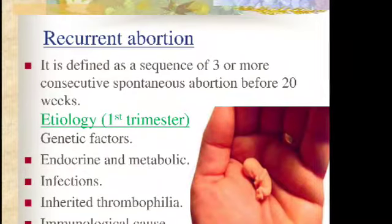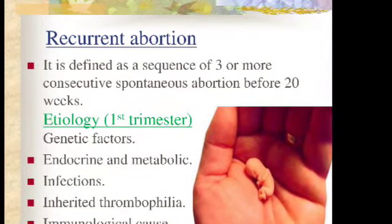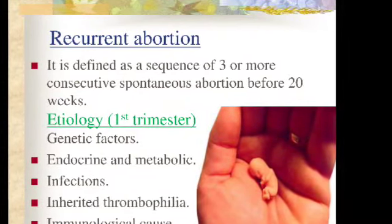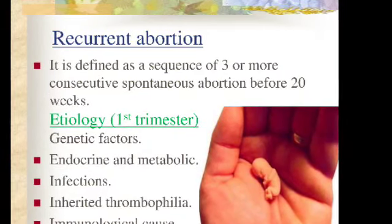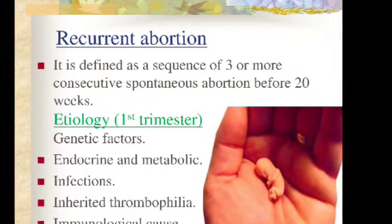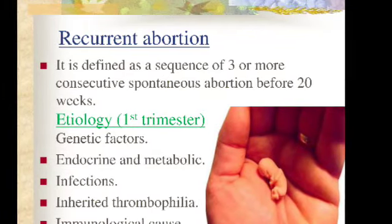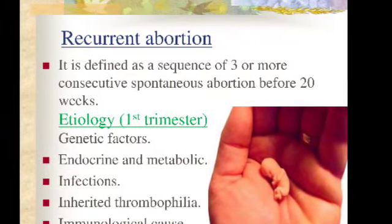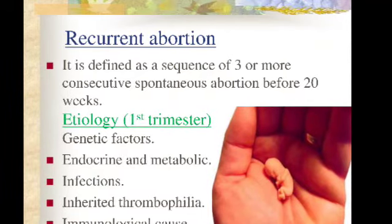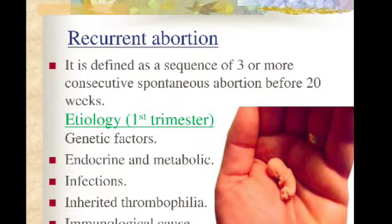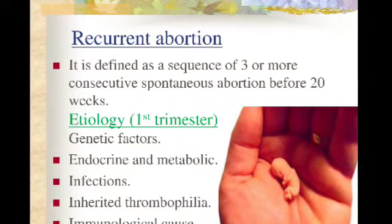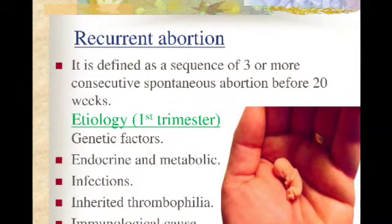The next type is recurrent abortion, defined as a sequence of three or more consecutive spontaneous abortions before 20 weeks. If a pregnant lady has spontaneous abortion more than three times before 20 weeks, it is called recurrent abortion.